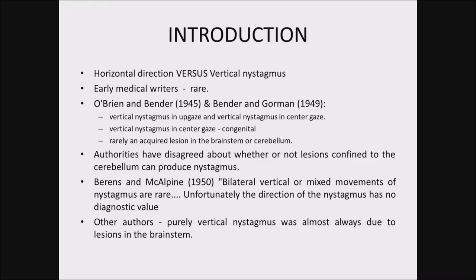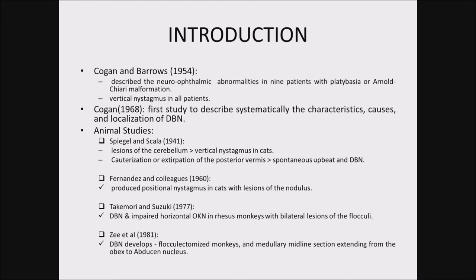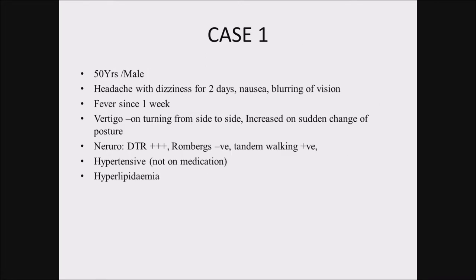There was debate about whether lesions were confined to the cerebellum or brainstem. Authors like Barron and MacAlpine even said these nystagmus were of no diagnostic value. It was only in 1954 that Cogan and Barron described nine patients with Arnold-Chiari malformation, all of whom had vertical nystagmus. In 1968, a publication described downbeat nystagmus characteristics, causes, and localization. Animal studies also deliberately caused lesions in the brainstem and cerebellum, demonstrating downbeat nystagmus with lesions in the floccular nodule lobe.